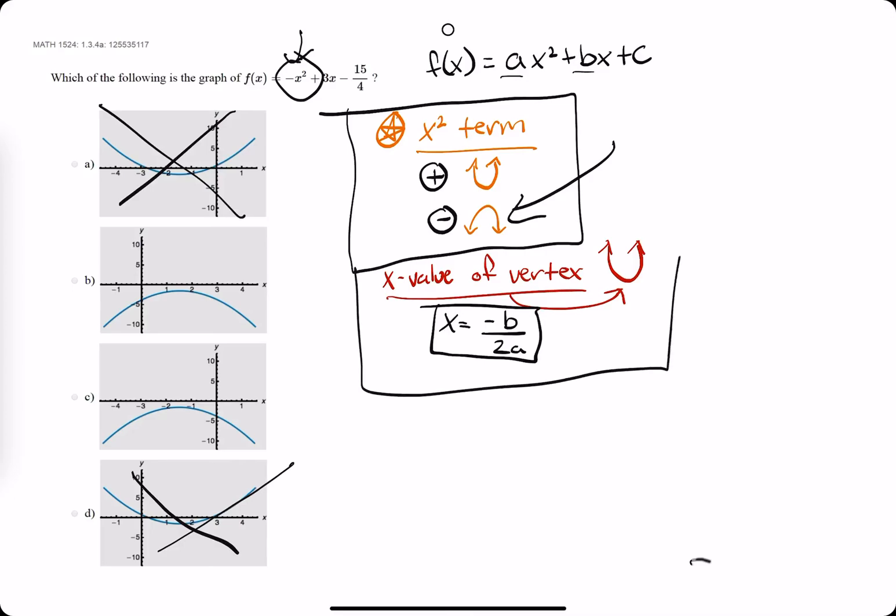So the next thing to identify is the x value of the vertex, or where it splits the parabola in half. That is x equal to negative b over 2a. And if you're wondering what a and b are,